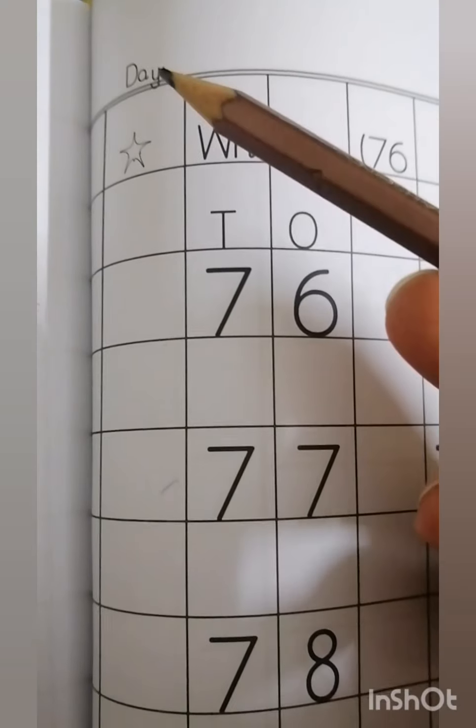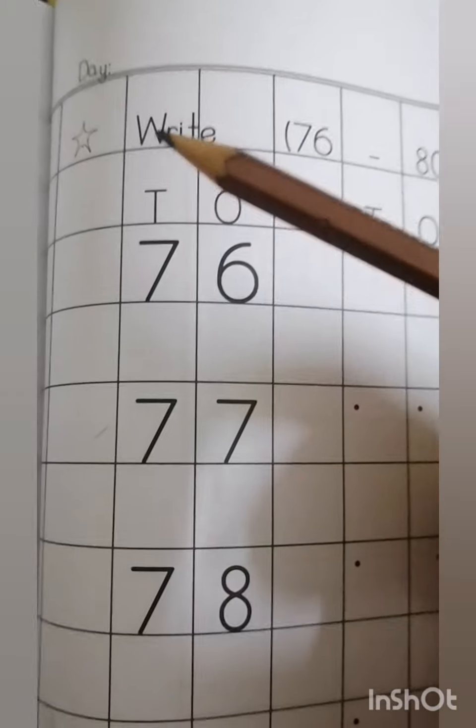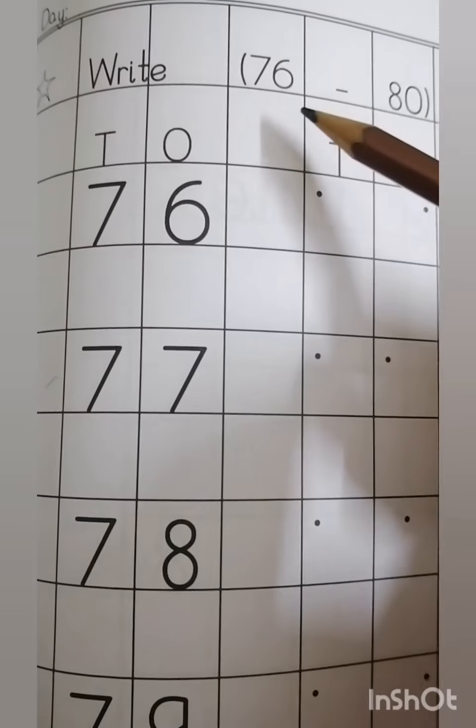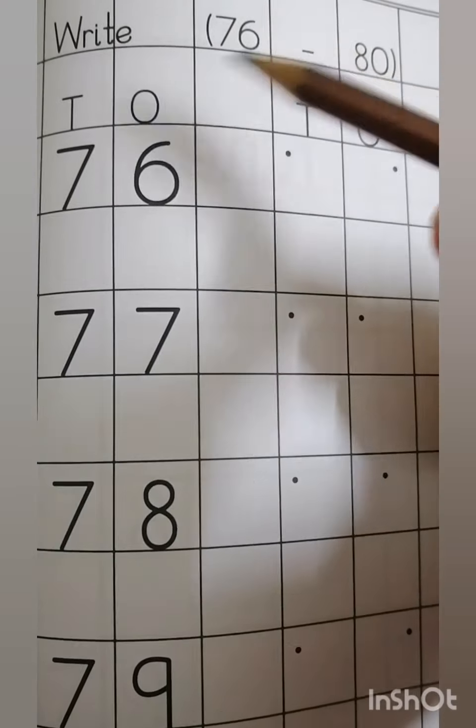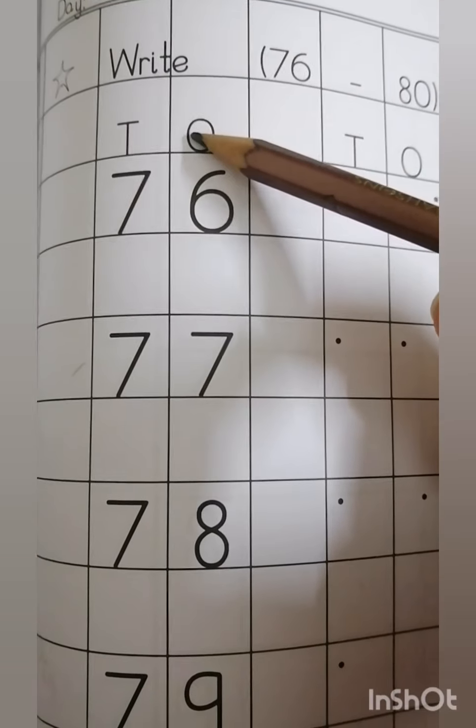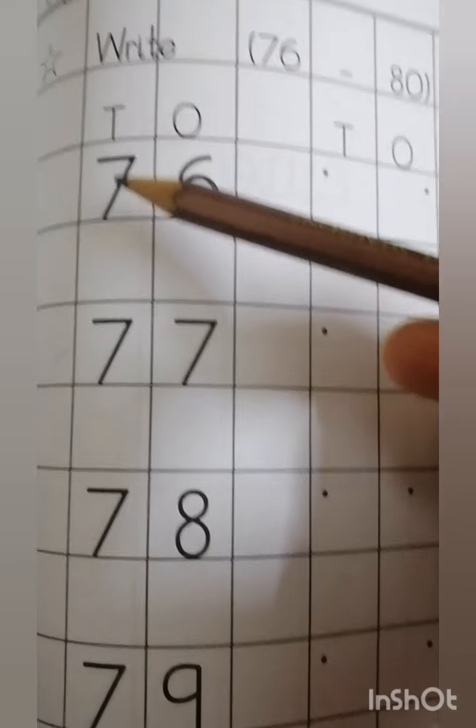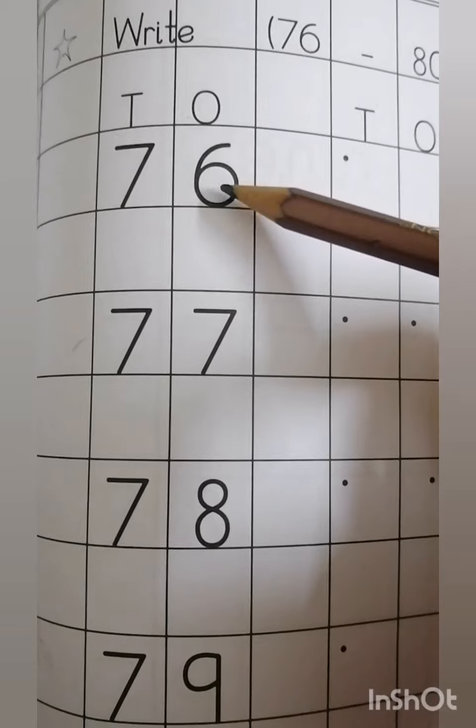Now this is the next page. First you write day and date on the top of the page, then write 76 till 80, tens and ones. You know about tens and ones. It's 7 and 6 here.